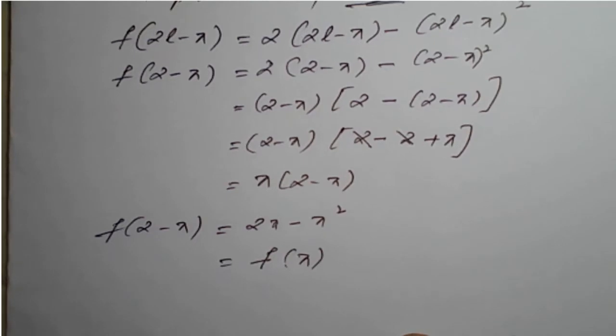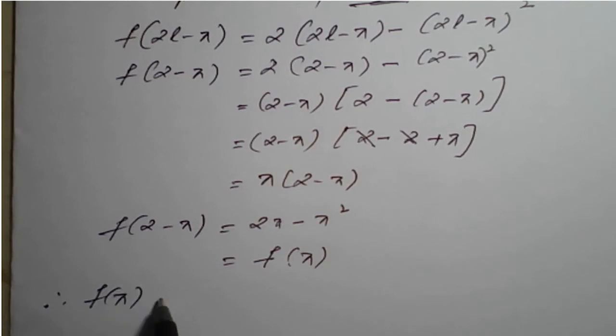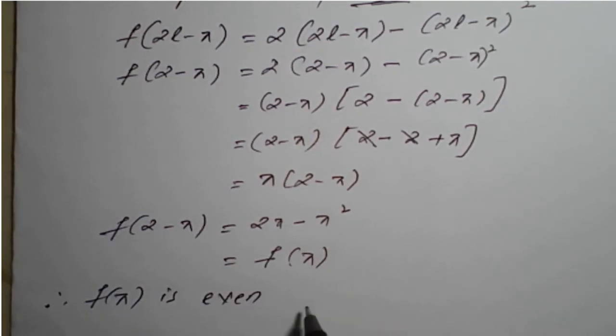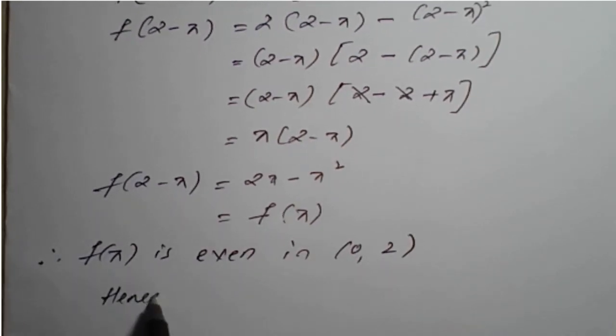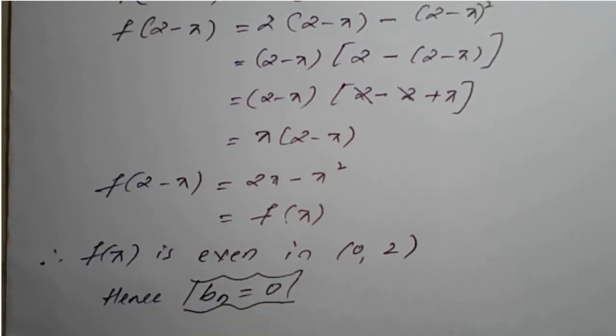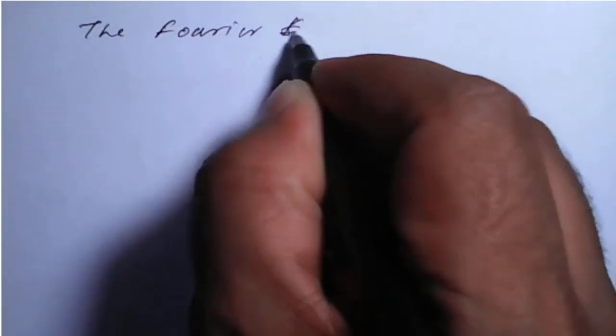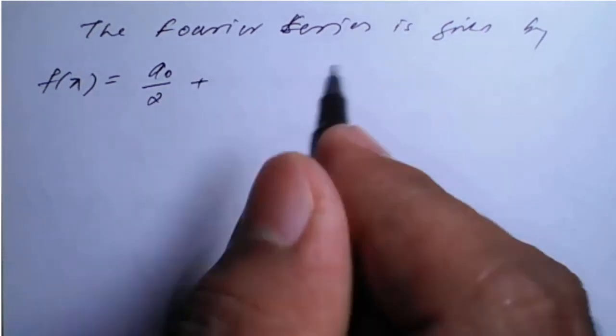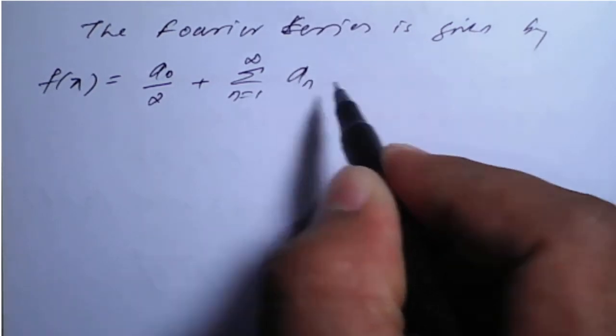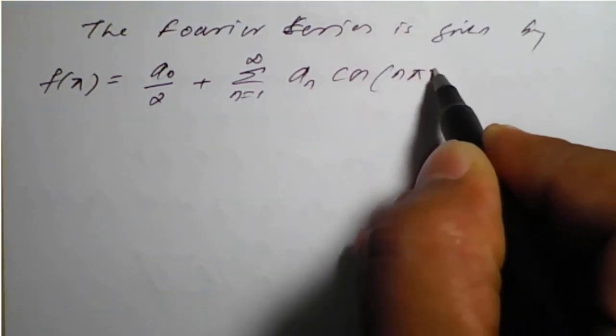Therefore f(x) is even in the interval (0, 2). Hence, since it is even, we can say that b_n = 0 in the Fourier coefficients.